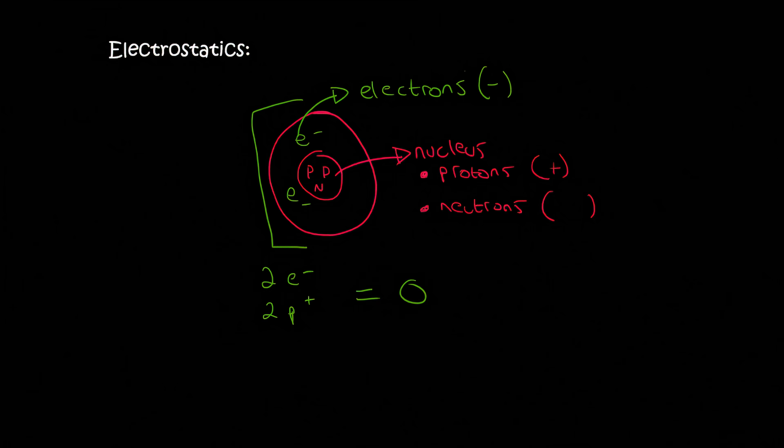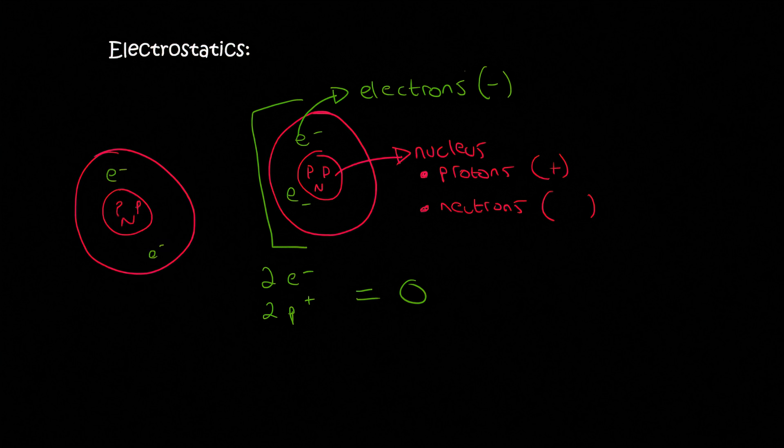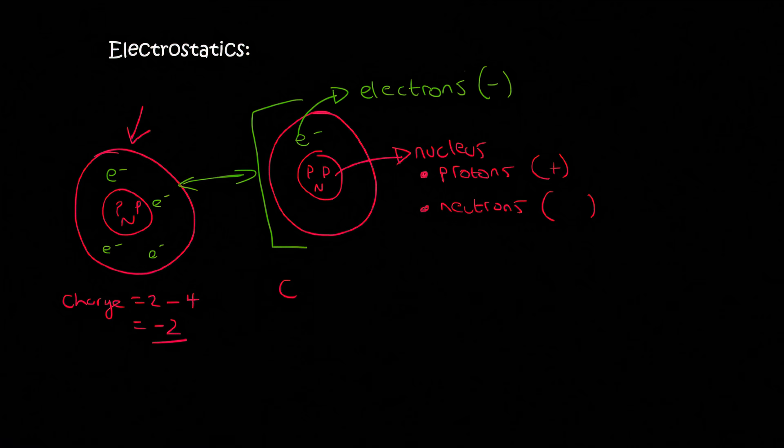If you had to put another atom of the same type, then there wouldn't really be any force between these two, because they are both neutral. But, if I do the following, in this atom now, I now have four electrons, and I've got two protons. So, I've got a total charge, which will be two minus four, because the four electrons are negative, and so that gives me minus two.